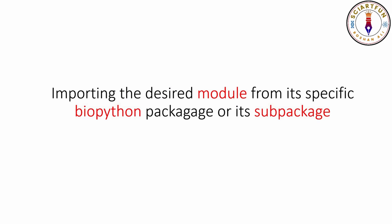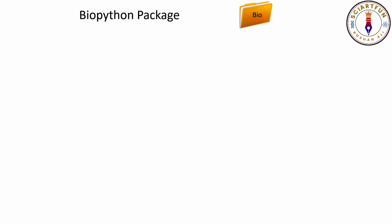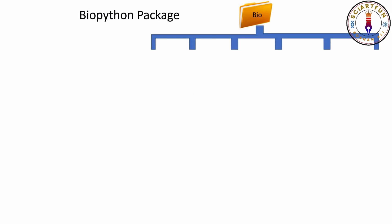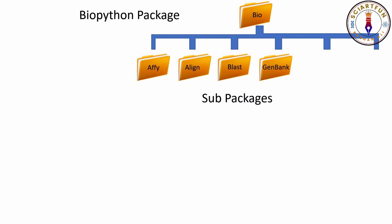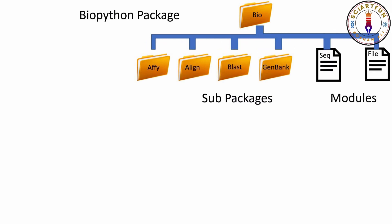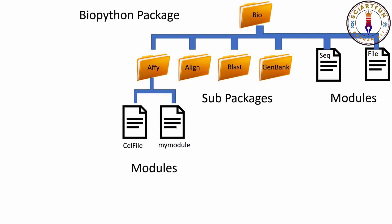Let me remind you that you use the help function to see the content of a package or subpackage. As you can see, we have a folder named Bio — this is our biopython main package. Inside Bio, we have many folders called subpackages. I have shown only four here; it also includes some modules. One of the most important modules here is the SeqIO module. Inside the Align subpackage, it contains two modules. One was present by default; the other named my_module was created by me as a sample.